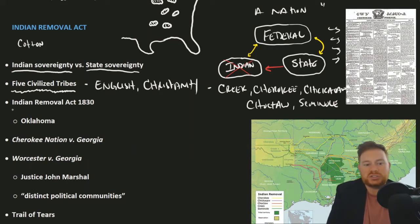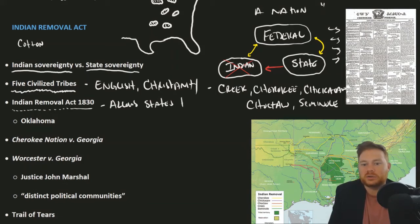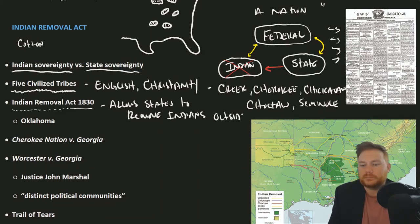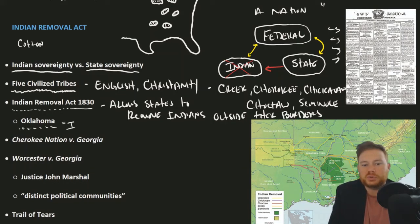Congress pushed this along with the Indian Removal Act of 1830, which gave states the power to remove Indians outside their borders. The territory they would be moved to would be Oklahoma, which would be called Indian Territory.